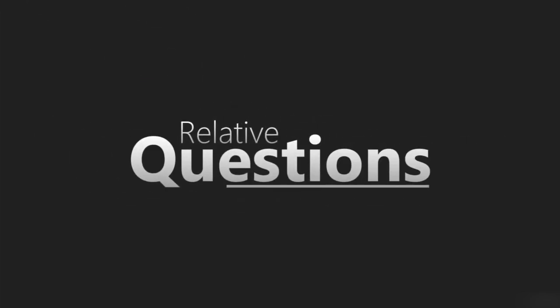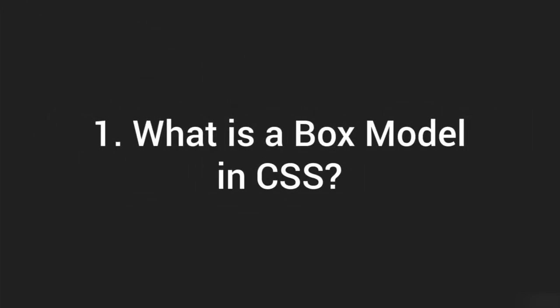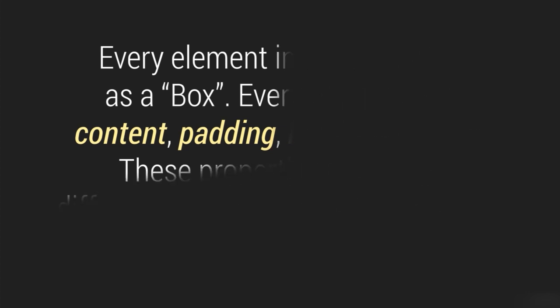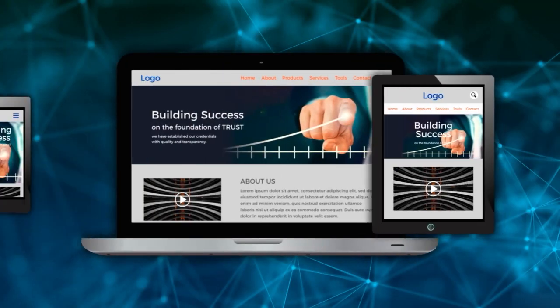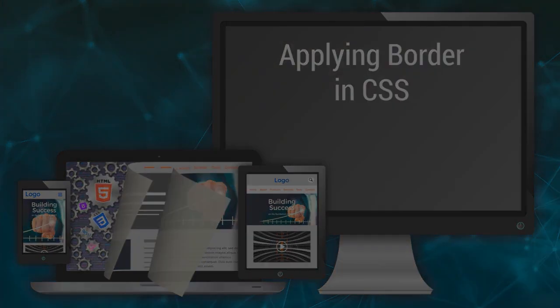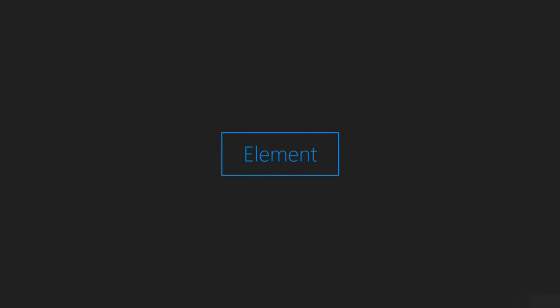What is a box model in CSS? Every element in CSS is treated as a box — that's what a box model is. Every element has content, padding, border, and margin. These are the four properties you use with different values to format the content using CSS. Every element you define inside the web page has its own border, and CSS provides a way to switch the border on for any particular element.